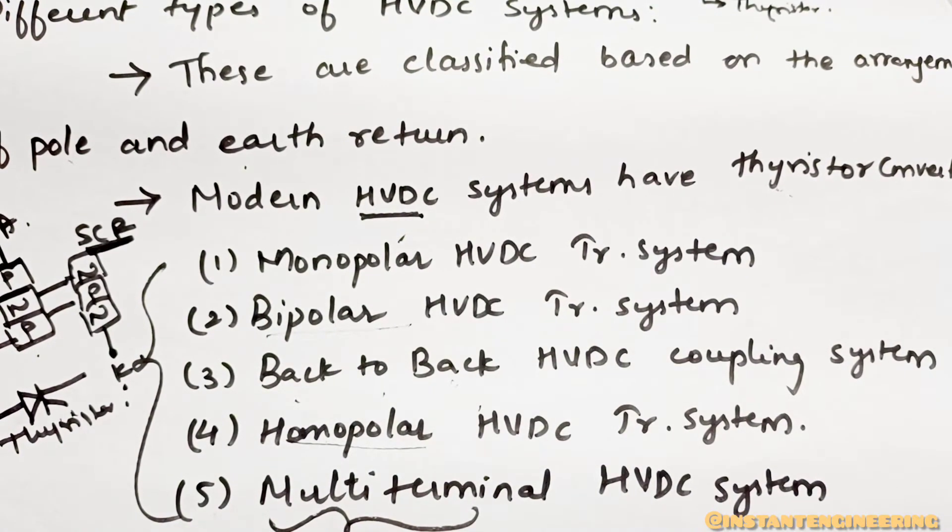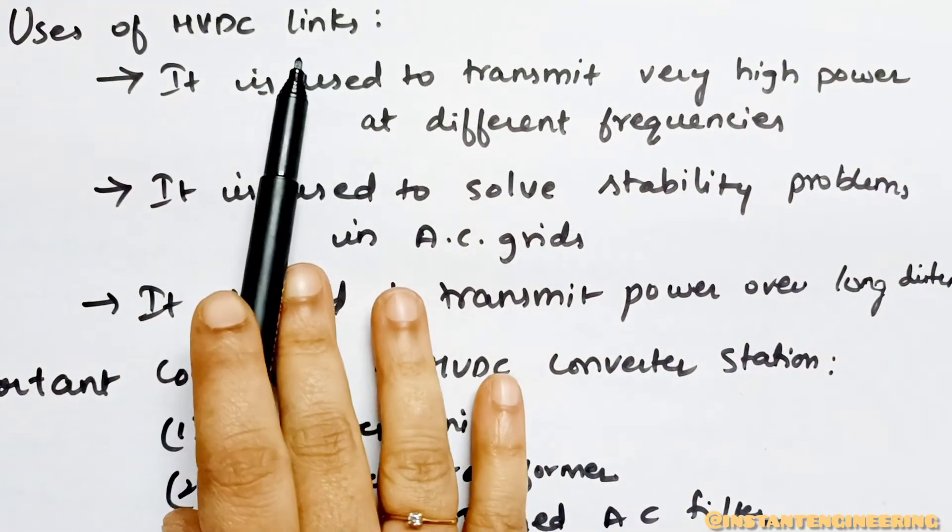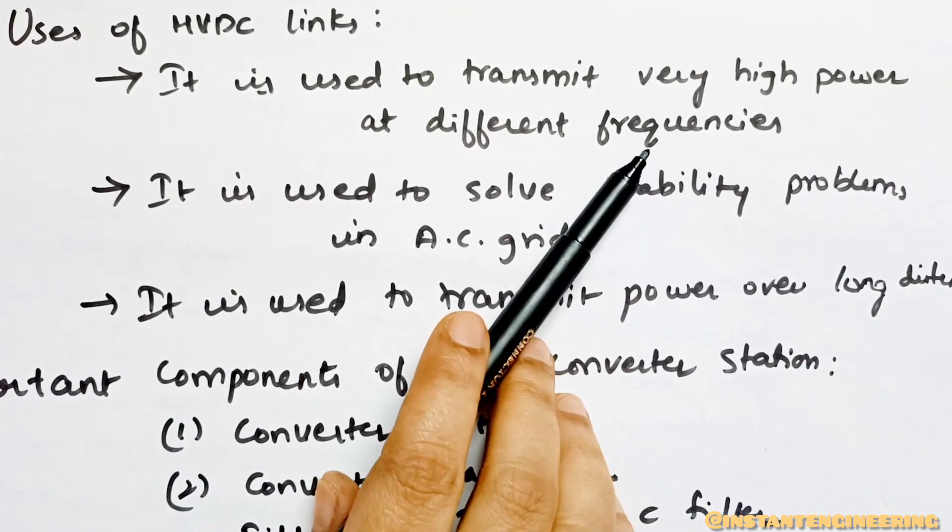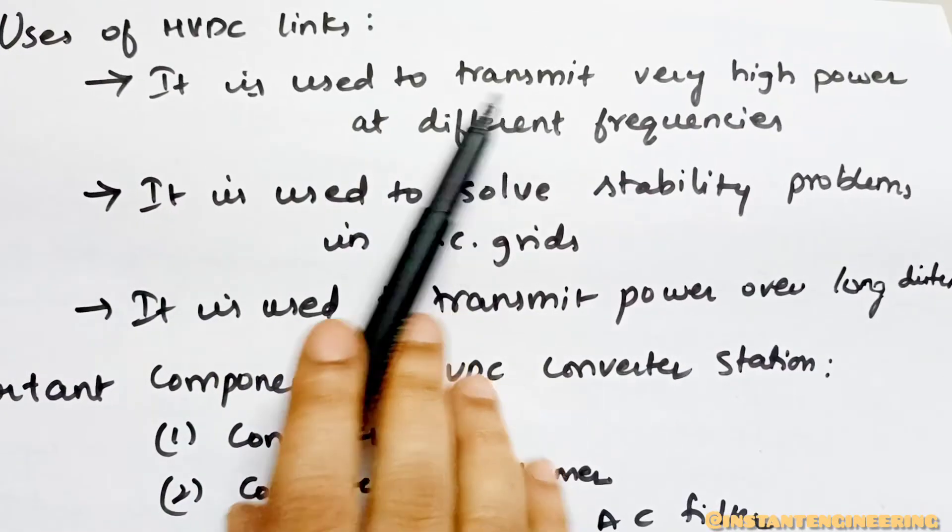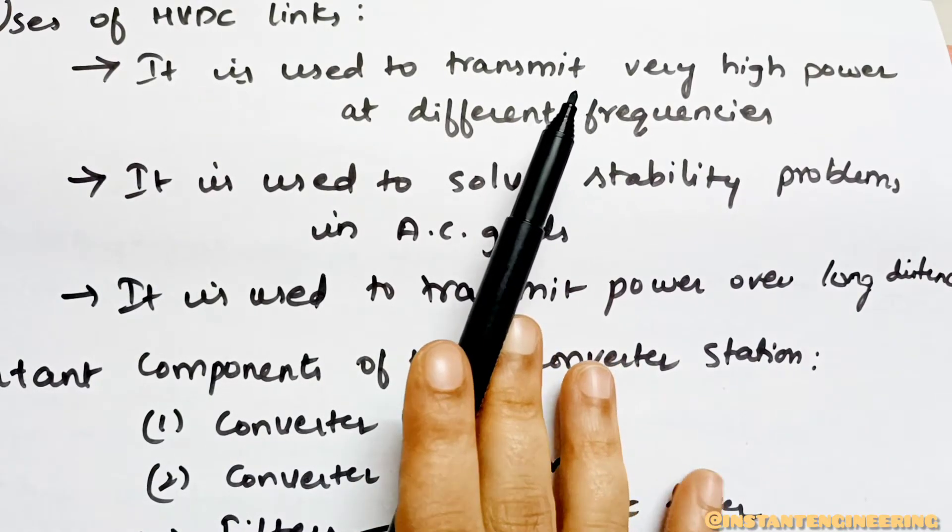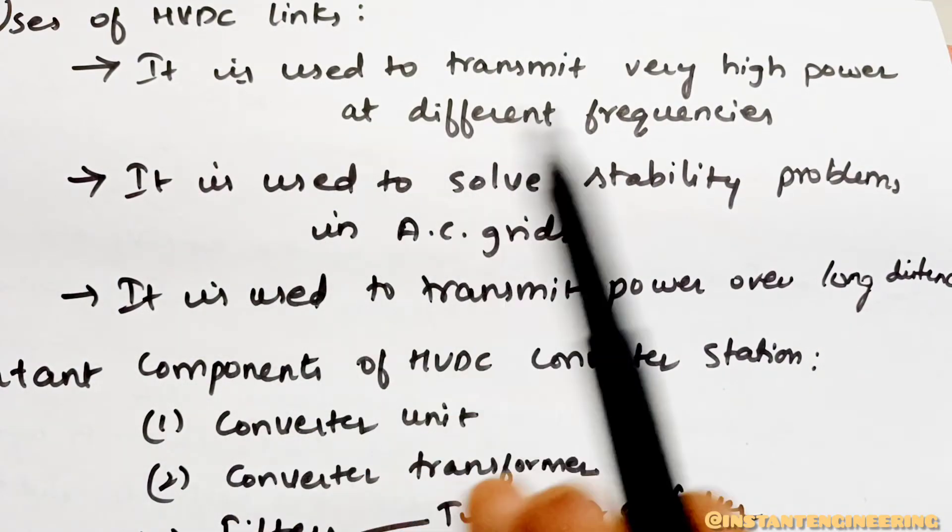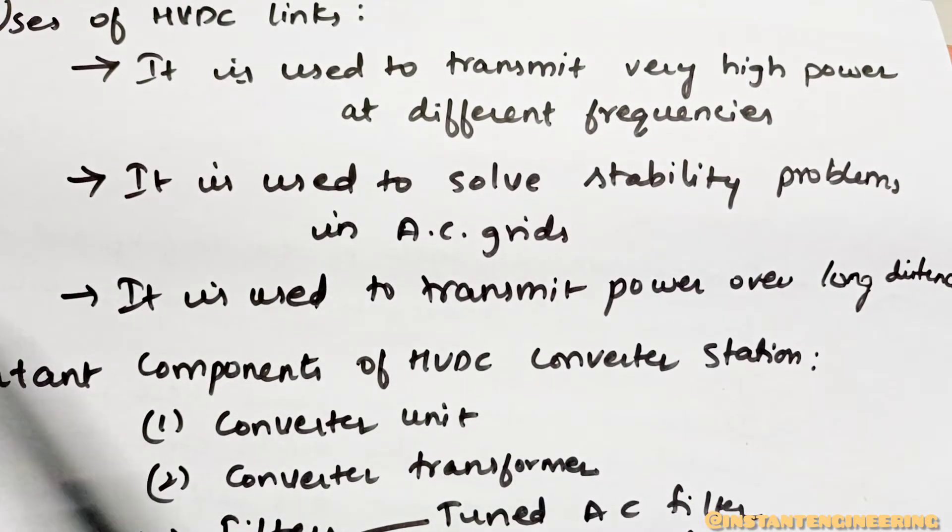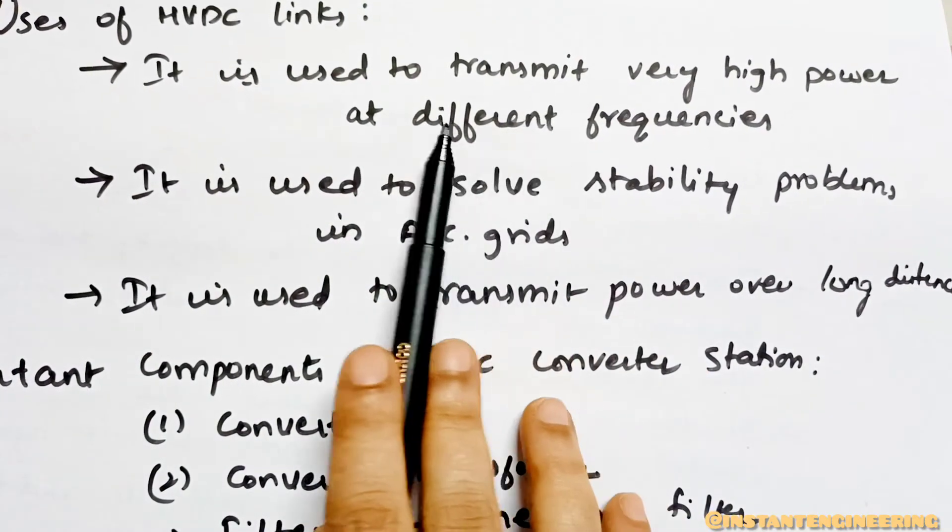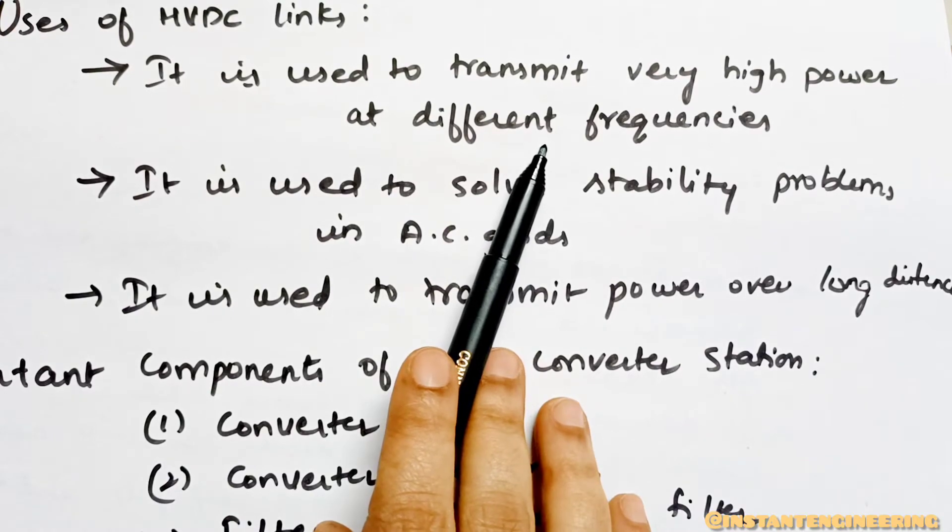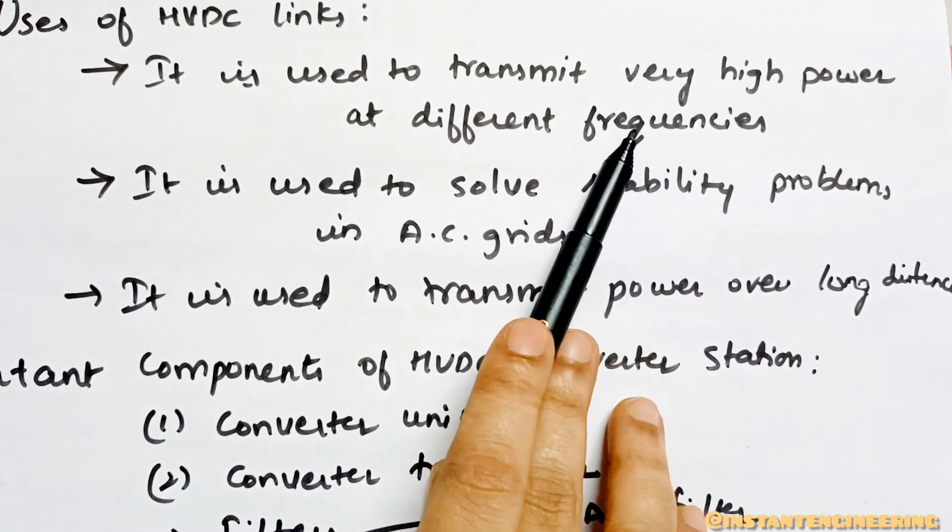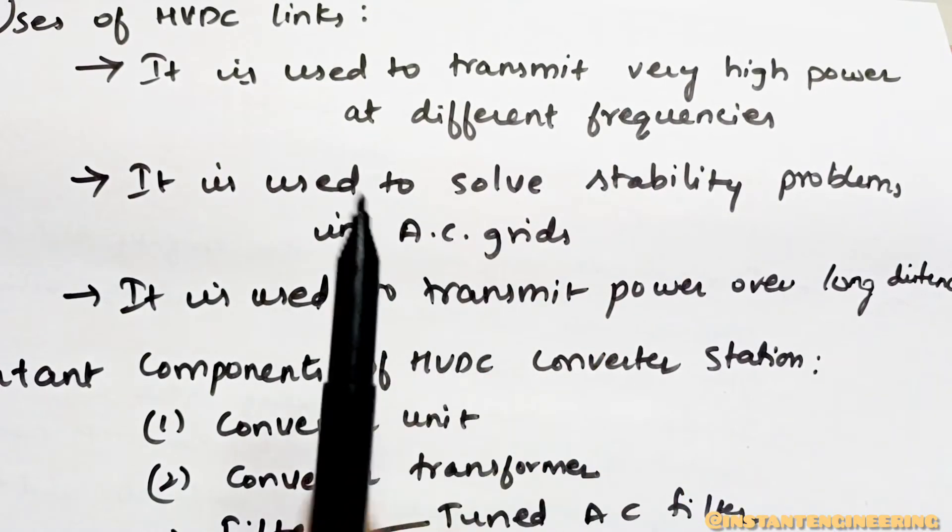Next one is uses of HVDC links. Why we use this HVDC is, basically it is used to transmit very high power at different frequencies. In transmission lines, we will be using HVDC mostly. When they generate the power, you need to transmit it. The generated power will be more and it has to be transmitted to longer distances. When there is high power at different frequencies, we can't maintain the same frequency throughout the transmission. There we will be using HVDC links so it can transfer the power whatever the frequency is.